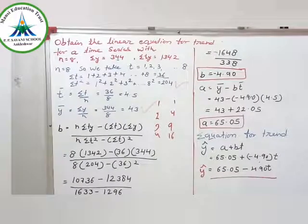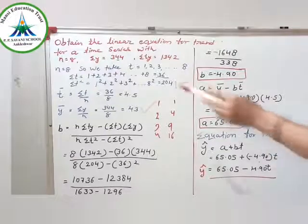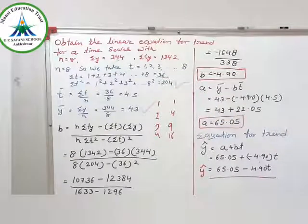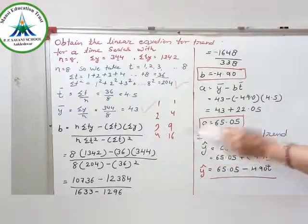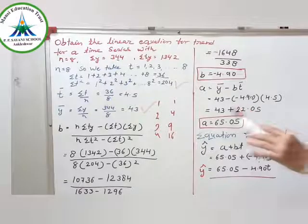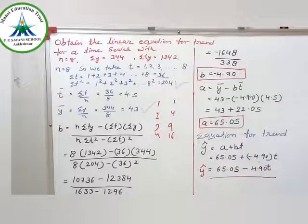Friends, we found out how easy this is. All values are given. Just what you find out is sigma t and sigma t square. I think you can understand this one. Bye and have a nice day.